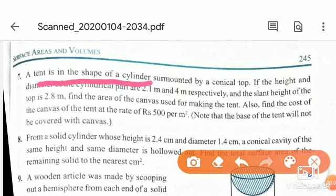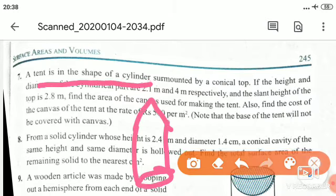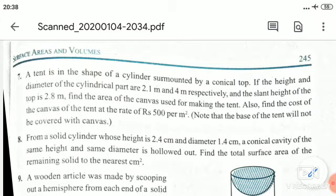A tent is in the shape of a cylinder surmounted by a conical top, so the tent is cylindrical shape. The height and diameter of the cylindrical part is 2.1 meter and 4 meter respectively. Find the area of the canvas used for making the tent.